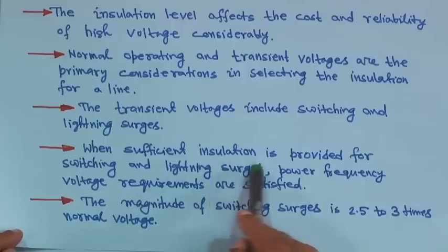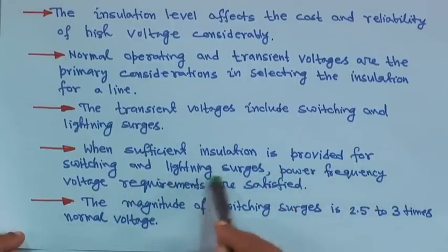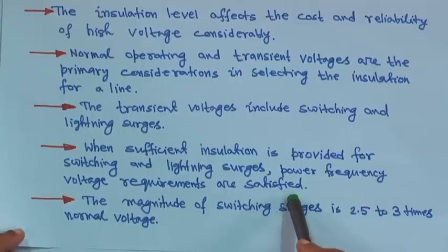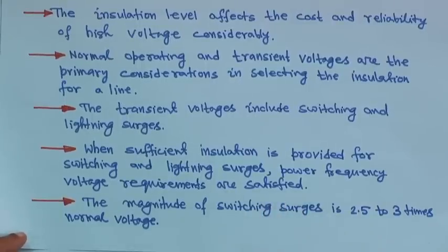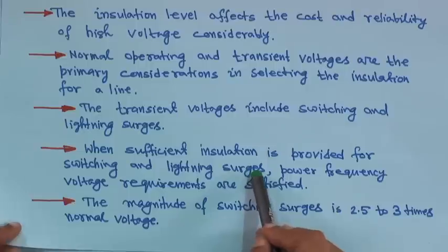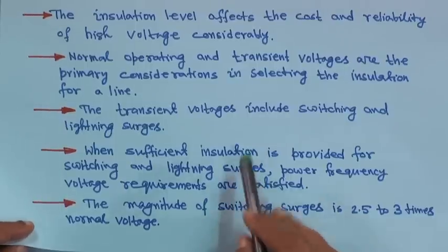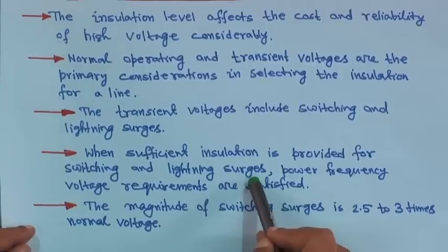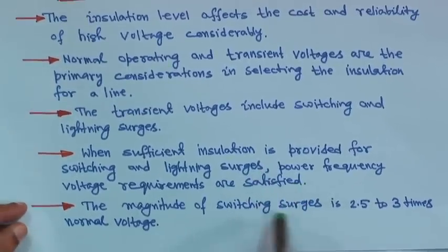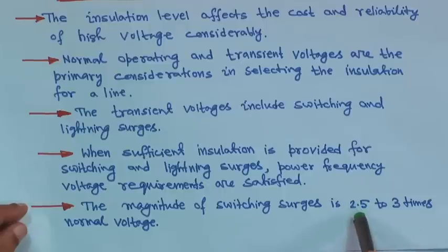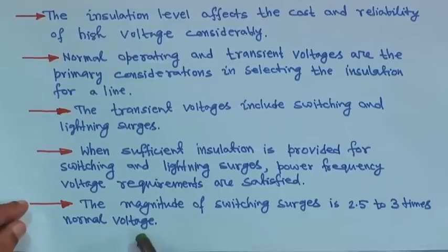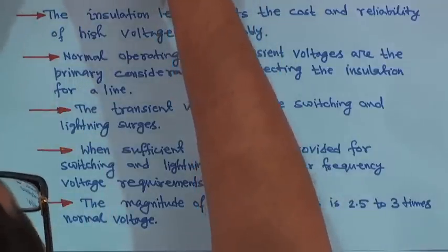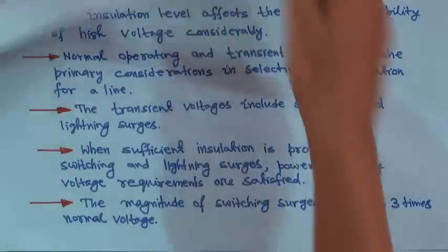When sufficient insulation is provided for switching and lightning surges, power frequency voltage requirements are satisfied. Sufficient insulation will be provided, but switching and lightning surges — particularly when designing — you have to take into account and accurate calculation is required. The magnitude of switching surges is 2.5 to 3 times the normal voltage, so the insulation must sustain that kind of high voltage.